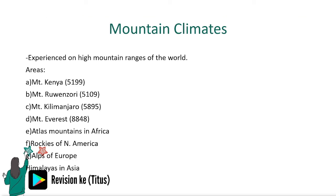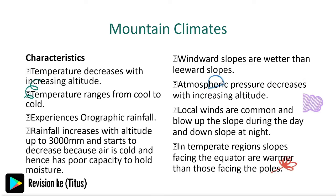Mountain climates are experienced on high mountain ranges of the world: Mount Kenya, Mount Rwenzori, Mount Kilimanjaro, Mount Everest, the Atlas Mountains in Africa, the Rockies of North America, the Alps of Europe, and the Himalayas in Asia. Characteristics: temperature decreases with increase in altitude, temperatures range from cool to cold, rainfall increases with altitude, windward slopes are wetter than leeward slopes, and local winds blow up the slope during the day and down slope at night.